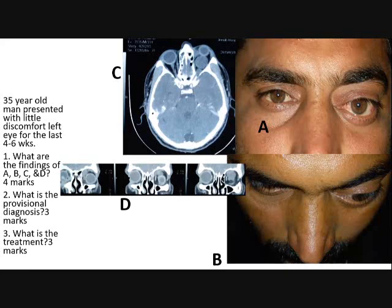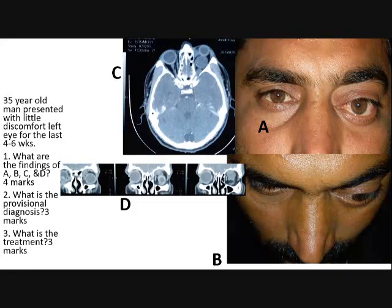Which view of the CT scan is this? C is the axial view and D is the coronal view.